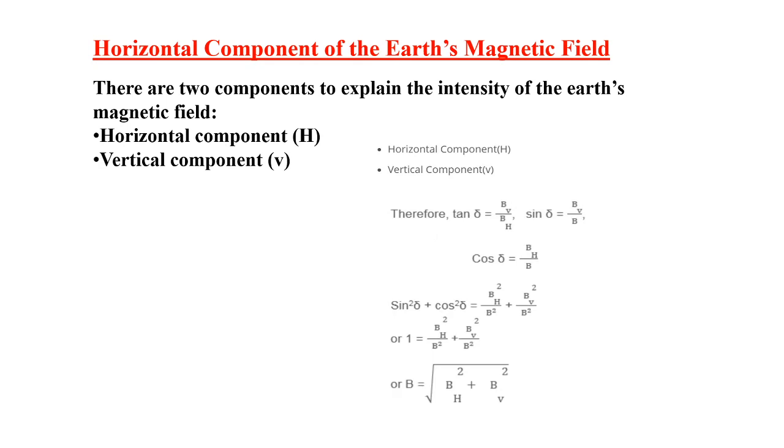Horizontal component of the earth magnetic field. There are two components to explain the intensity of the earth magnetic field: horizontal component H and vertical component V. From this equation, we can find the horizontal component and vertical component, also the total magnetic field.